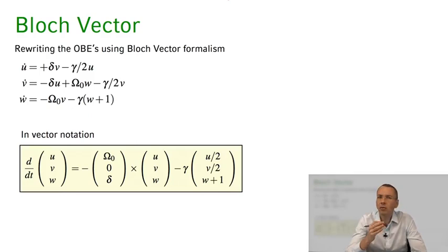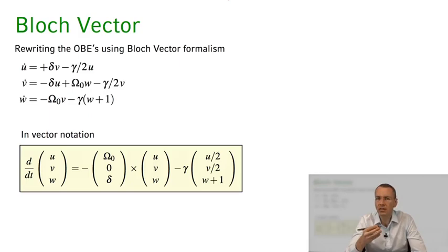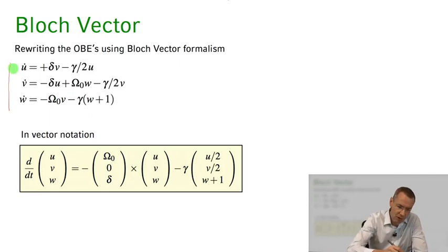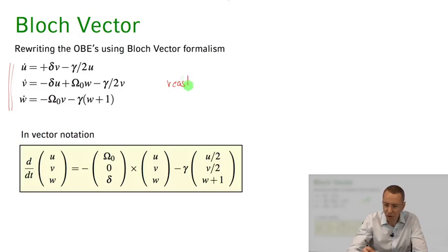I remind you that we had already written down the dynamical equations of the two-level atom system in terms of the density matrix equations — the differential equations for the density matrix — and because the Bloch vector components u, v, and w are nothing but the density matrix components, we can recast the same differential equations into differential equations for u, v, and w that describe the dynamics of the Bloch vector. These are the same differential equations now recast into our Bloch vector formalism.